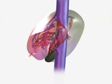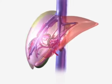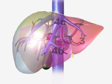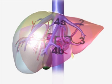The left liver is composed of segments 2, 3, and 4. Segment 4 has been further split into segments 4a and 4b, based on independent inflow portal pedicles to these segments.